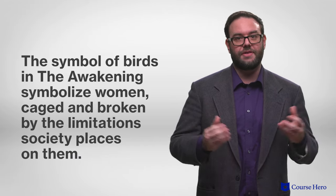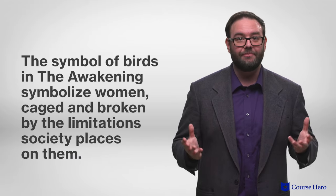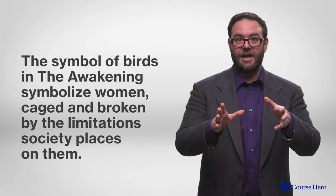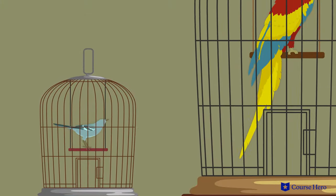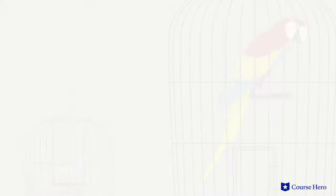The symbol of birds in The Awakening symbolize women, caged and broken by the limitations society has placed on them. The opening image of the novel is of two caged birds, a parrot and a mockingbird. Later in the novel, Mademoiselle Reisz tells Edna Pontellier that she will need strong wings to fly if she's committed to defying traditional women's roles.